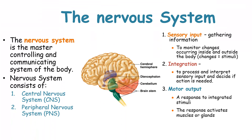The nervous system is the master controlling and communicating system of the body. It comprises of the central nervous system and the peripheral nervous system. The nervous system has three main overlapping functions. The first is sensory input, which helps the nervous system to gather information and to monitor the changes which occur inside and outside the body.